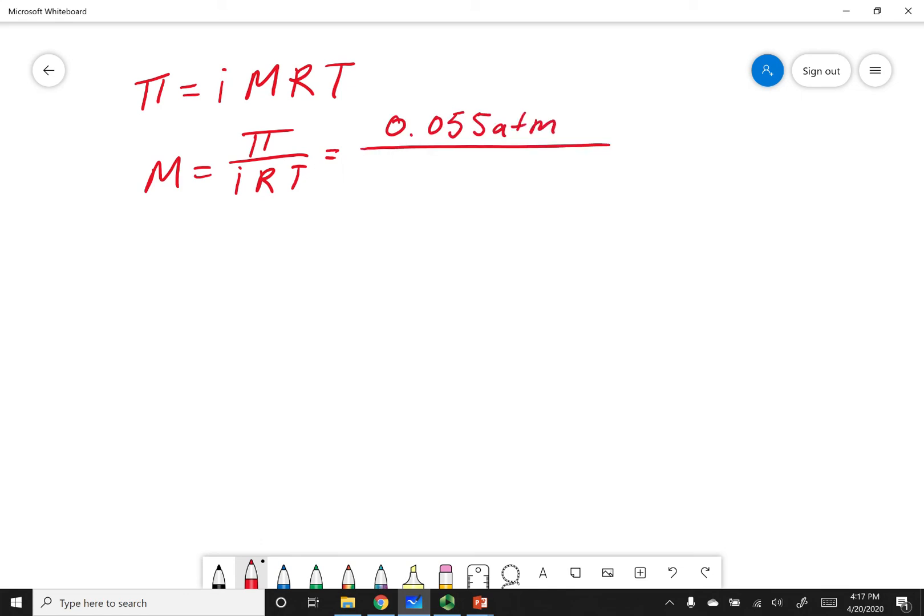And then I told you that my polymer is not going to break up into more particles. And so it gets an i of one. I'm going to use my gas constant. And so you'll notice I have atms, I have Kelvin, I have moles, liters. So this is the R that we are going to use for osmotic pressure.